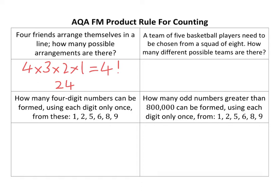For the first pick there are eight choices, second pick seven, six, five, four. That's five numbers — I'll stick that in my calculator. It's quite a lot of different choices the coach has at their disposal.